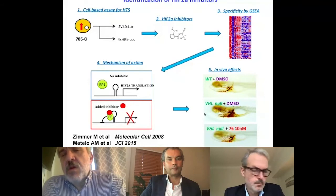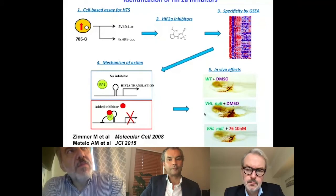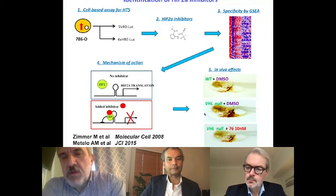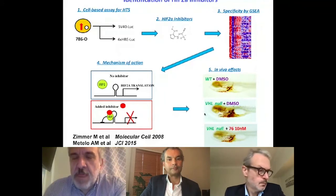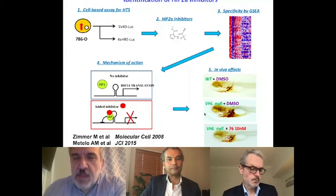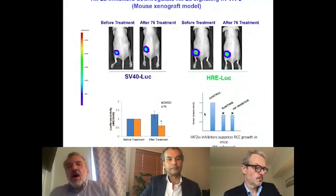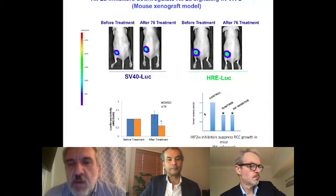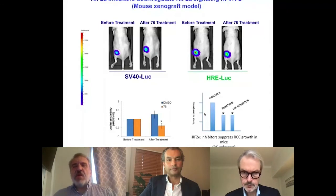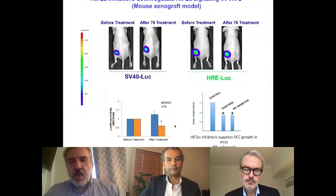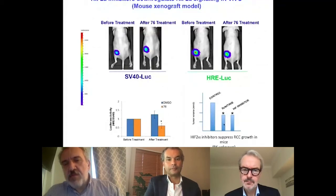We worked on these molecules and wanted to show that they were efficacious. Because their pharmacokinetic behavior was not optimal, we used a zebrafish VHL-null model, which recapitulates elements of the disease, and we saw that treating the fish with this molecule decreased erythropoiesis and other features of VHL disease in a dose-dependent manner. We also used xenograft animal models and showed that the HIF-2α inhibitors decreased HRE activity and, over a period of three weeks of administration, suppressed tumor formation at a level similar to sunitinib.